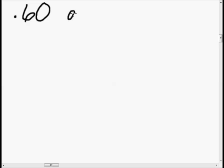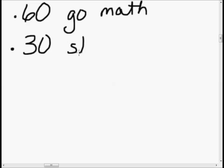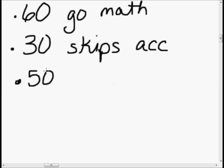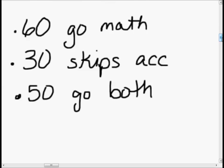When I'm seeing problems like this, the first thing I think of is a Venn diagram. But let's do the very first thing I always like to do, which is write down what we know. Reading the problem, I see a couple of things. We know that there is a 0.6 or 60% chance that she goes to math, a 0.3 or 30% chance that she skips accounting, and a 0.5 or 50% chance she goes to both.